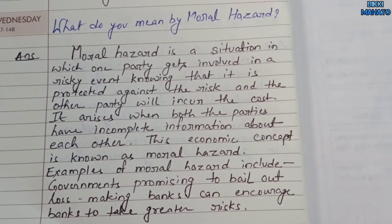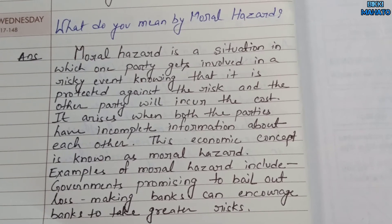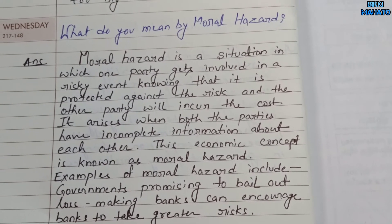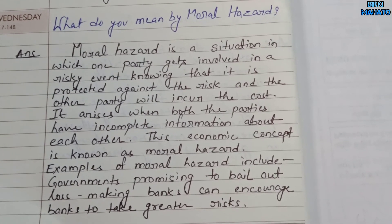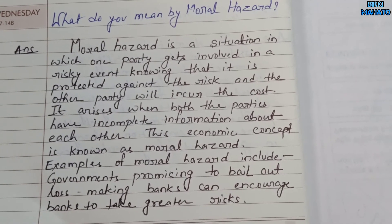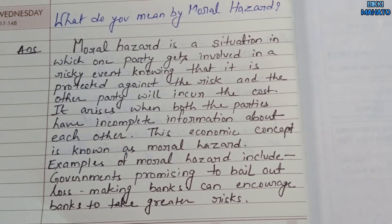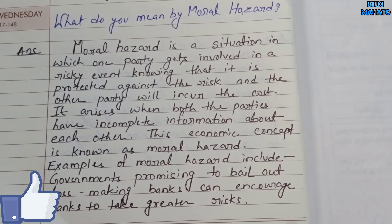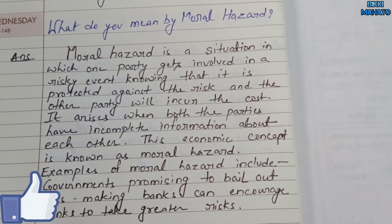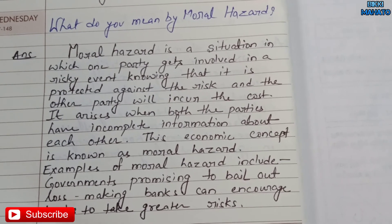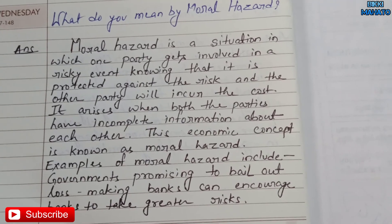This economic concept is known as moral hazard. Examples of moral hazard include governments promising to bail out loss-making banks, which can encourage banks to take greater risk.